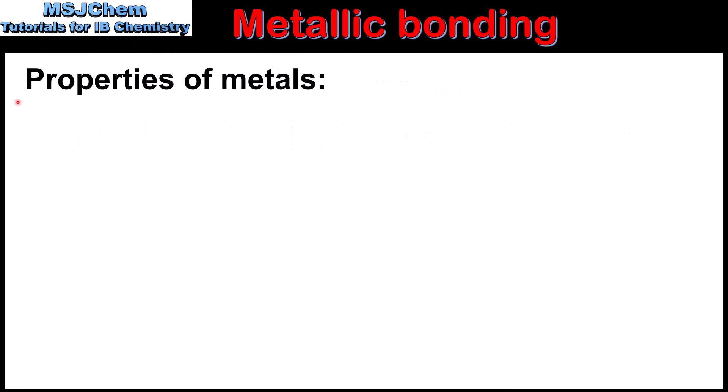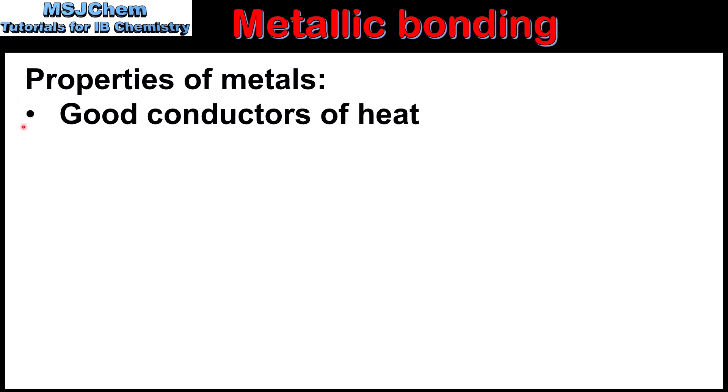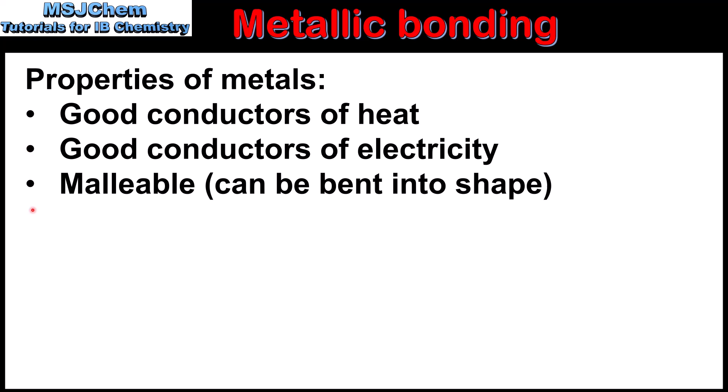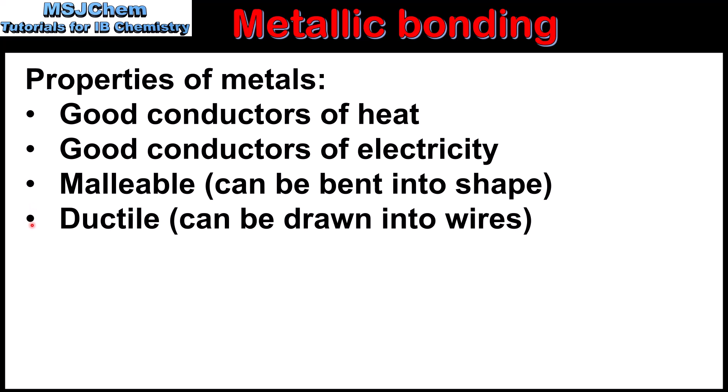We'll start with a quick look at the properties of metals. Metals are good conductors of heat and also good conductors of electricity. Metals are also malleable, which means they can be bent into shape, and ductile, which means they can be drawn into wires.